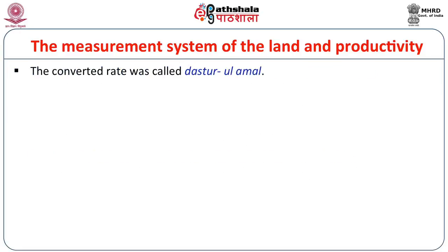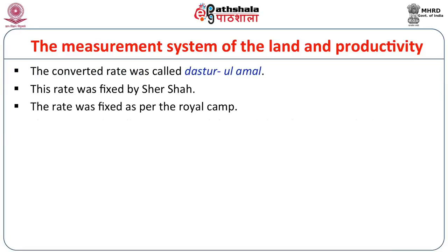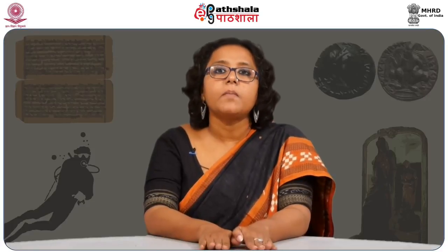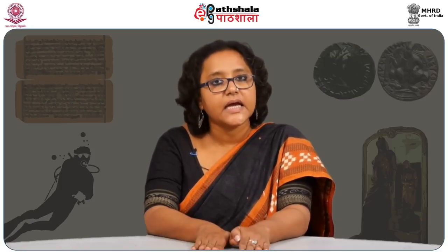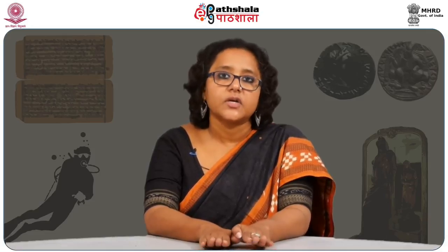The converted rate was called Dastur ul Amal. The rate was fixed by Sher Shah and was set as per the royal camp. One has to understand that the prices in the villages were much less compared to the center, and thus what the peasants had to pay was much higher, and their miseries were greatly increased.